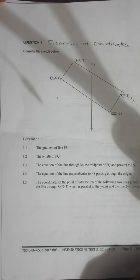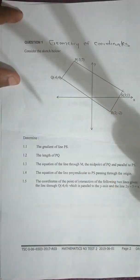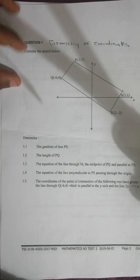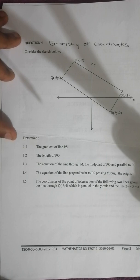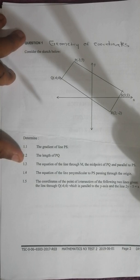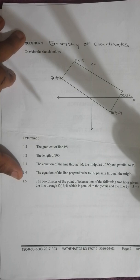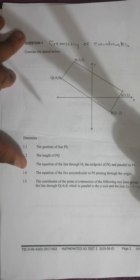There are three questions and the first question is on geometry of coordinates, whereby we are given a Cartesian plane with a figure which has four points: P, S, R, and Q. The sub-questions are: 1.1 determine the gradient of line PS; 1.2 the length of PQ; 1.3 the equation of the line through M, the midpoint of PQ and parallel to PS; 1.4 the equation of the line perpendicular to PS passing through the origin; and 1.5 the coordinates of the point of intersection of the line through Q with coordinates negative 6 and 4, which is parallel to the y-axis, and the line 2y minus 5 equals x.